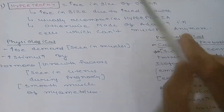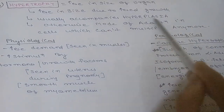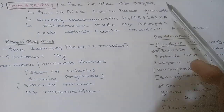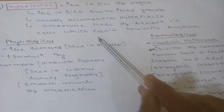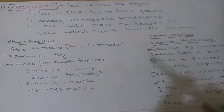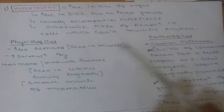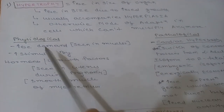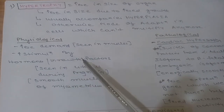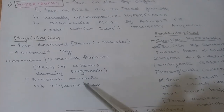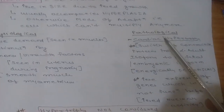Hypertrophy is an increase in size of any organ, due to increased growth. Hypertrophy usually accompanies hyperplasia. This mode of adaptation is seen in cells that can no longer multiply — they have lost their ability to divide, so they increase in size instead. Physiological causes include increased demand, seen mainly in muscles, and increased stimulation by hormones or growth factors, seen in the uterus during pregnancy.